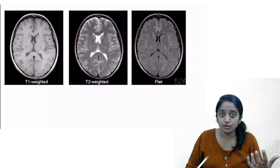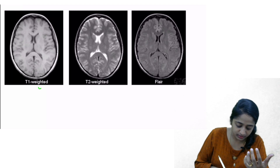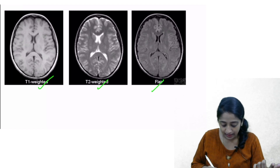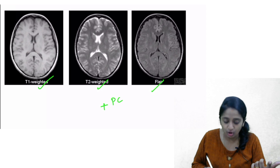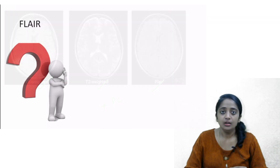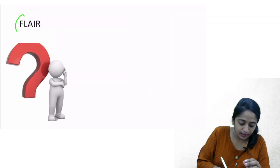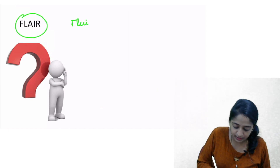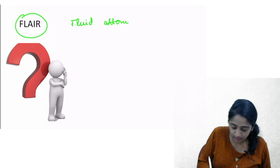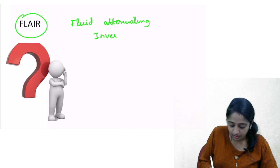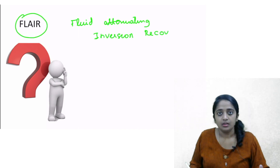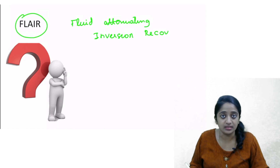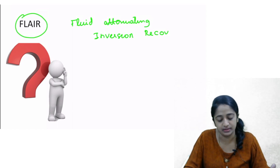What do we mean by conventional sequences? They include the T1, the T2-weighted, the FLAIR, as well as the post-contrast sequences. First, let's talk about FLAIR. FLAIR stands for fluid attenuating inversion recovery, meaning you obtain T2-weighted sequences in which the fluid signal is suppressed.